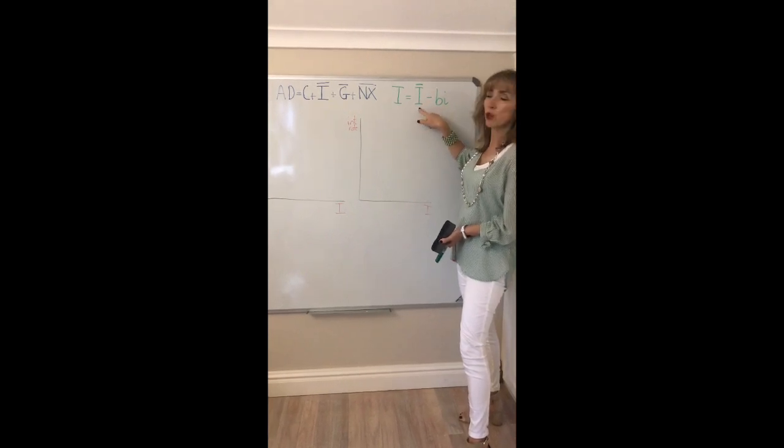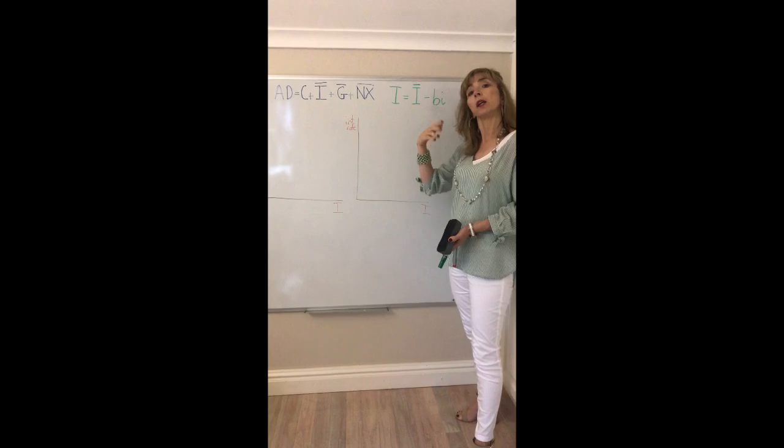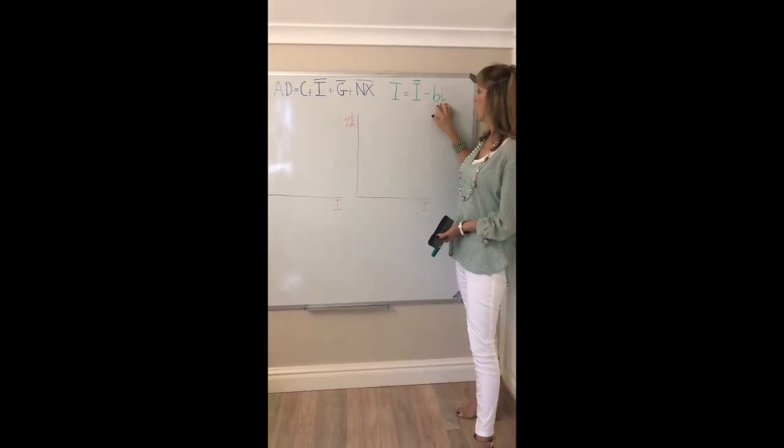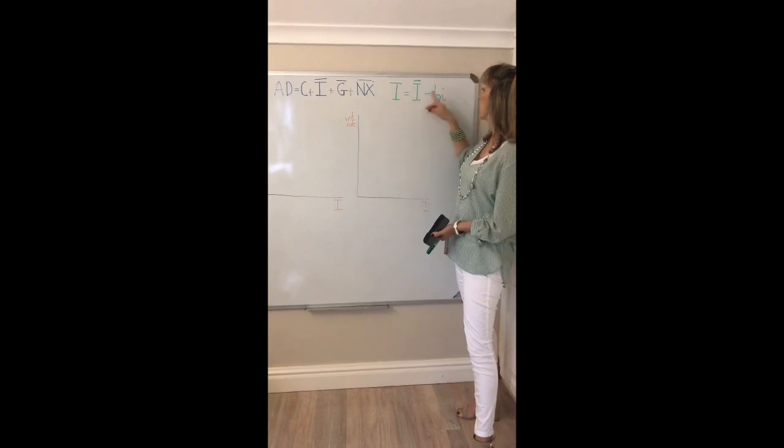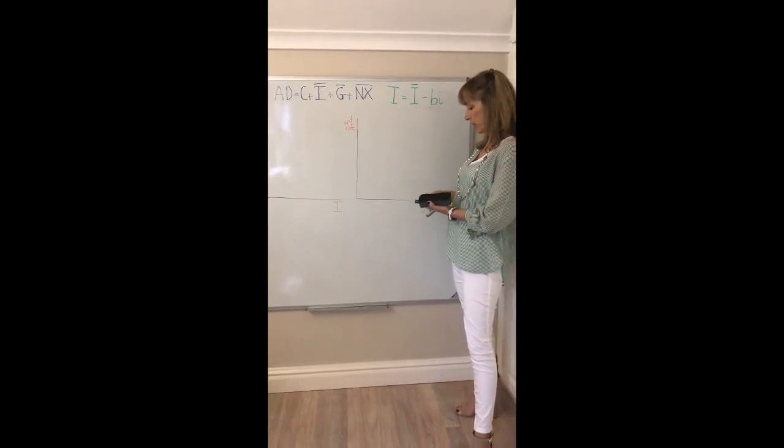So it would be driven by things like investor confidence in your economy. Political uncertainty might dampen that component. This part here shows you how planned investment changes when the interest rate changes and we see that that relationship is negative.